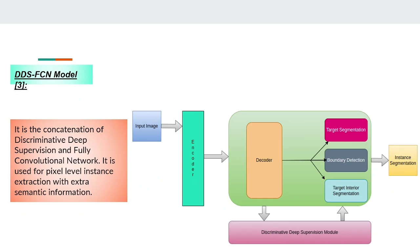The second approach is the DDS-FCN model, also called Discriminative Deep Supervision with Fully Convolutional Network. The DDS module is used for pixel-level instance extraction and adds extra semantic information to the encoder-decoder model. The input image first goes into the encoder network, and from each level of the encoder, features are passed to the decoder network as well. The regular network output and the extra semantic information are concatenated, making instance segmentation more accurate than other methods.